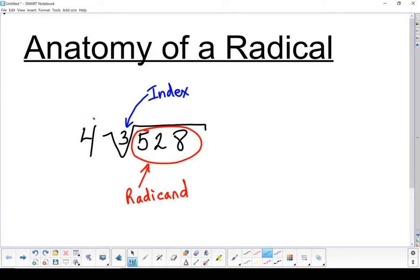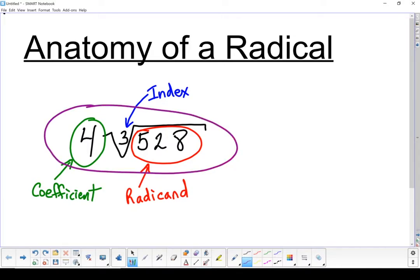Our last piece is out front. That's what's known as a coefficient. If you don't see a coefficient written there, we assume it's a 1. Altogether, this whole thing is a radical.